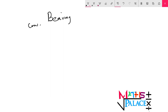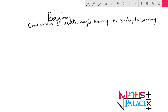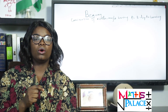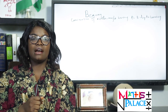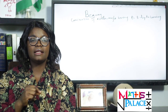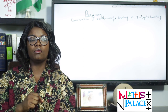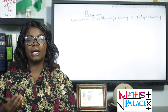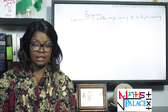We have the conversion of acute angle bearing to three-digit bearing. Remember, we said acute angle takes bearing from either the north or the south — we shall be having southeast, southwest, northeast, or northwest. While the three-digit bearing takes bearing from the north only. So, if you are given an acute angle, can you interpret it in three-digit bearing? That's what we are looking at in this section.